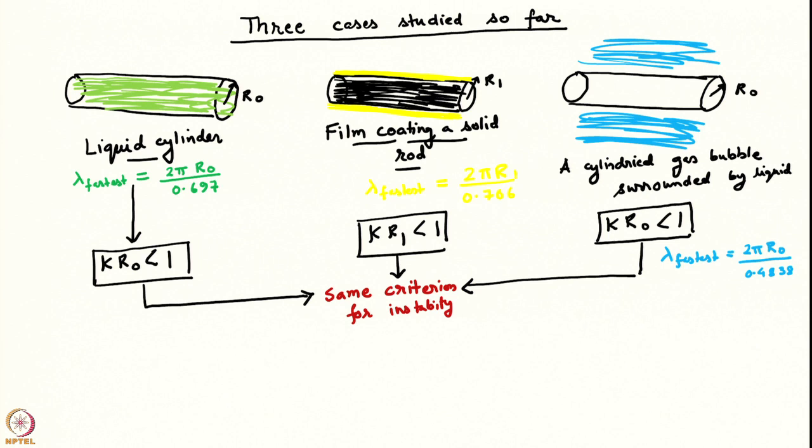In all cases, there is an instability — some perturbations produce oscillations, others lead to exponential growth in time. In all cases, the boundary between stability and instability remains the same, namely k times some radius less than 1.